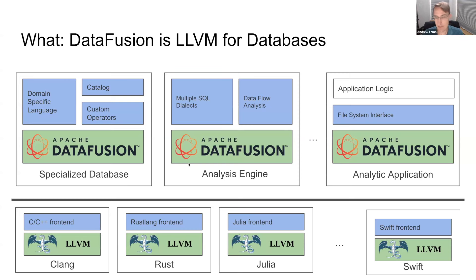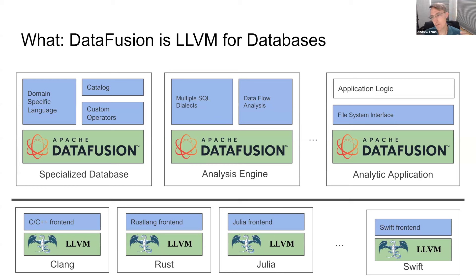Rust can focus on the borrow checker and more advanced features without worrying about optimized code gen for x86 — and likewise Swift and Julia. My view is that's the same role something like DataFusion plays. There are other similar technologies like Apache Calcite and Velox. Rather than continually re-implementing the same low-level pieces that are required for good performance but are well-understood and not differentiating, you share all that effort with DataFusion.